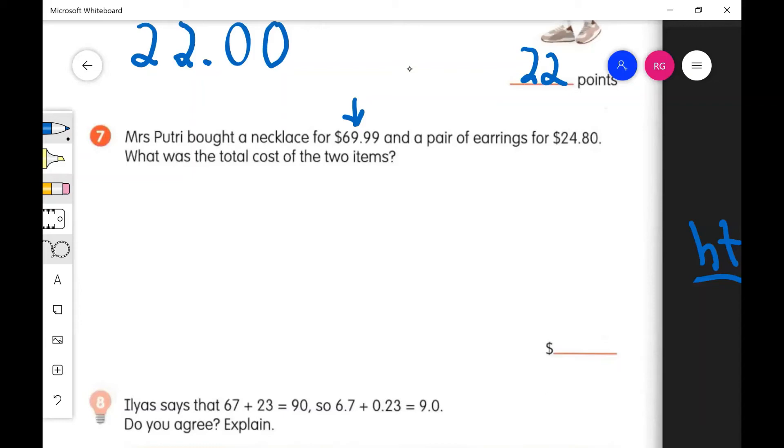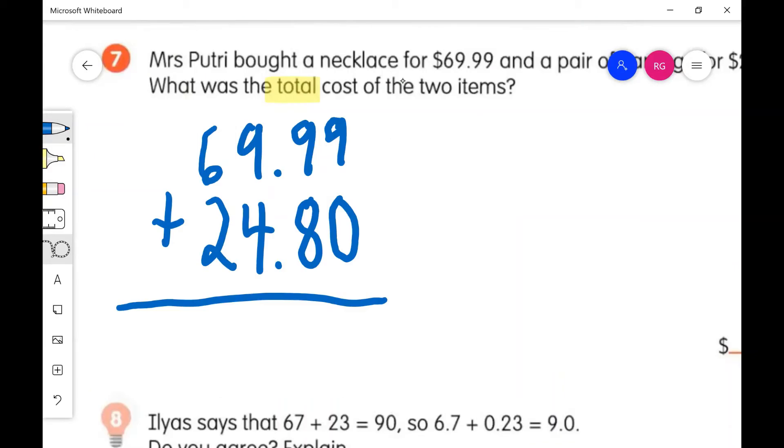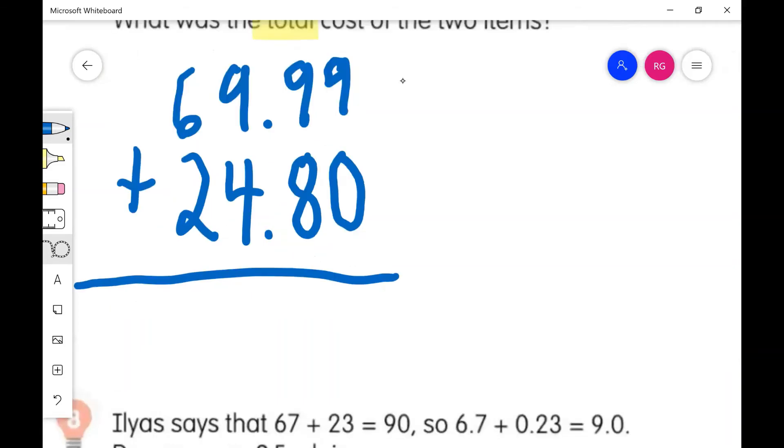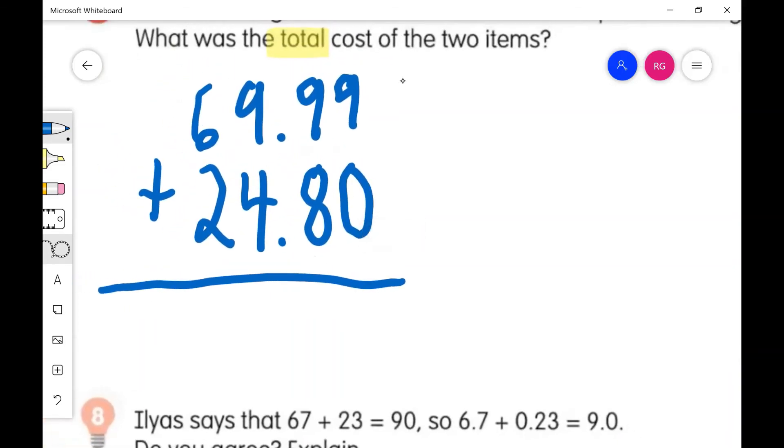Mrs. Putri bought a necklace for $69.99 and a pair of earrings for $24.80. What was the total cost of the two items? You could draw a necklace or earrings if you wanted and label the prices. The keyword here is total, so we have 69.99 plus 24.80.